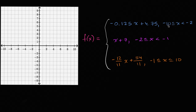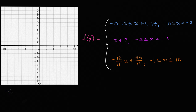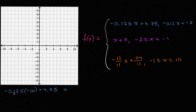Let's think about this first interval. When negative 10 is less than or equal to x, which is less than negative two, our function is defined by negative 0.125x plus 4.75. So this is going to be a downward sloping line. The easiest way to graph it is to plot the endpoints and then draw the line. When x is equal to negative 10, we have negative 0.125 times negative 10 plus 4.75. The negative times the negative is positive, and 10 times this is going to be 1.25 plus 4.75, which is equal to six.